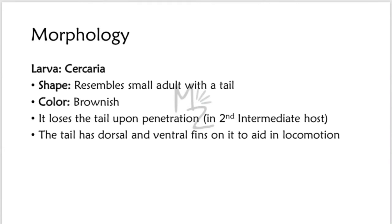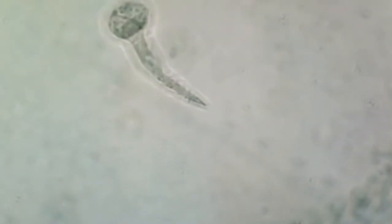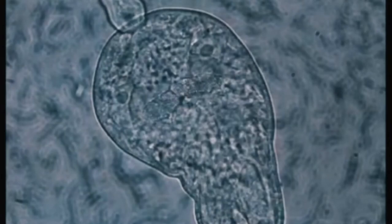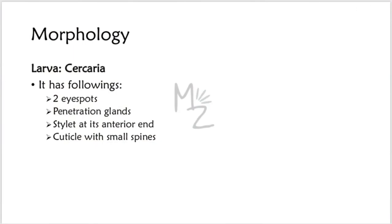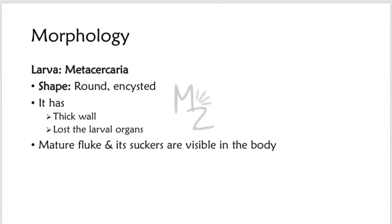Cercaria resembles a small adult with a tail. It is brownish in color and loses its tail upon penetration into the second intermediate host. It is not responsible for causing infection in humans but causes infection in the second intermediate host. The tail of the cercaria has dorsal and ventral fins to aid in locomotion. Cercaria has four glands, two eye spots, penetration glands, a stylet at its anterior end, and a cuticle with small spines. Metacercaria is round and encysted, with a thick wall; it has lost its larval organs and the mature fluke and its suckers are visible in its body.